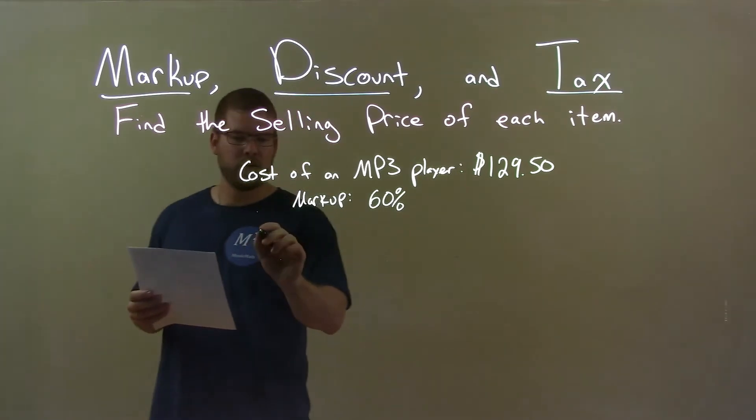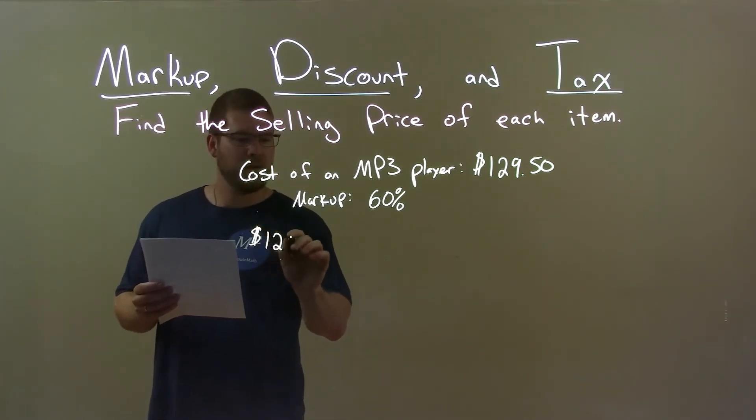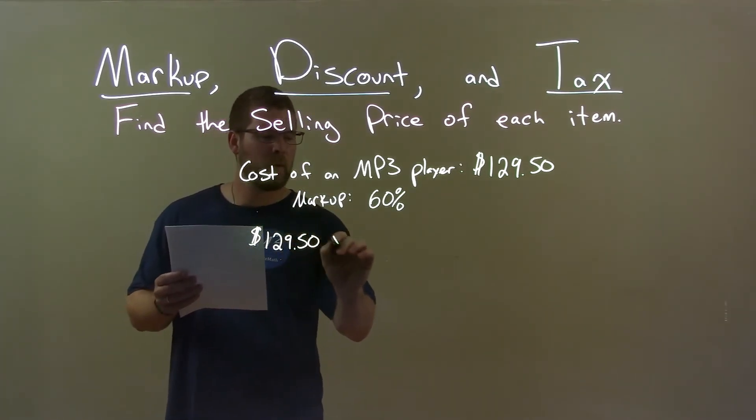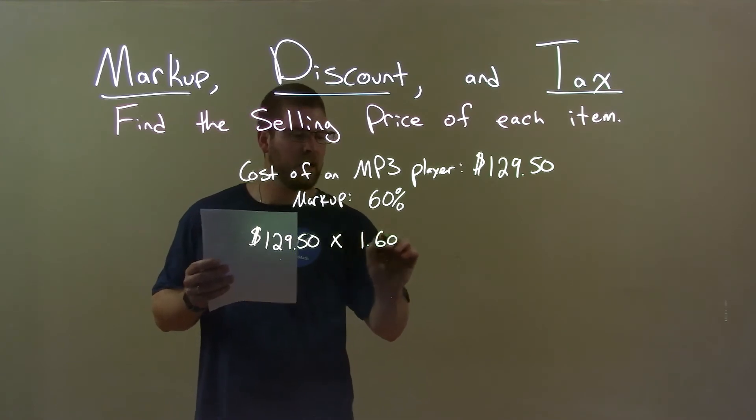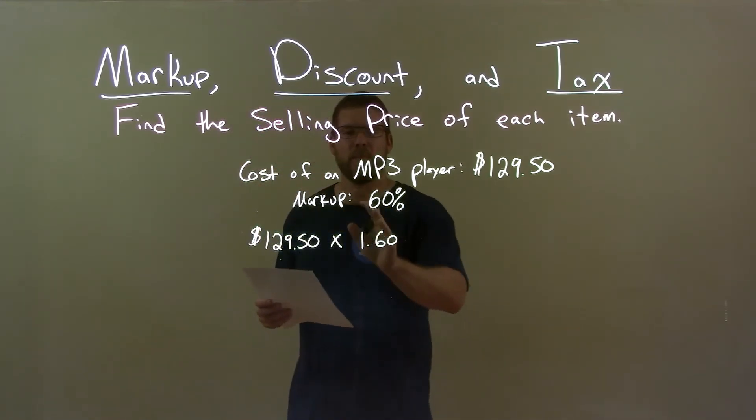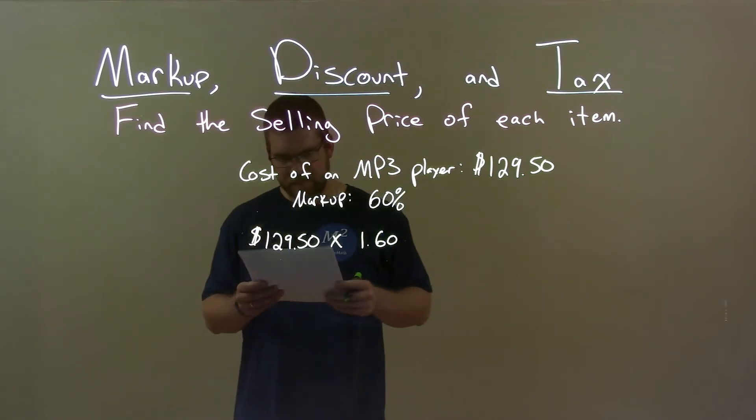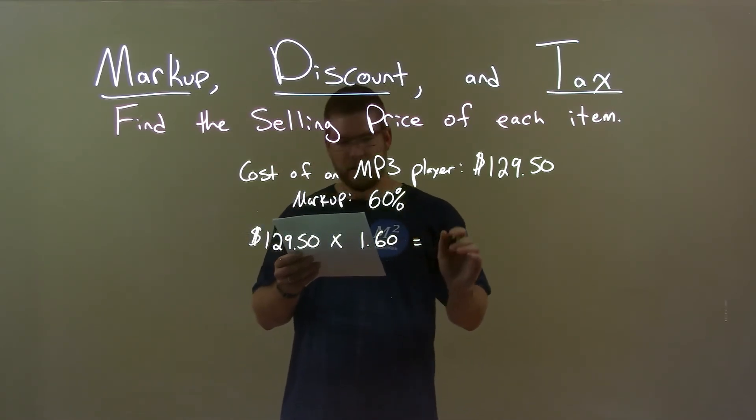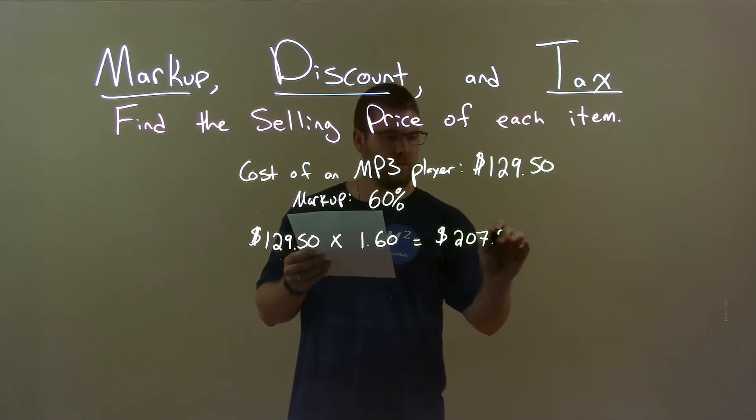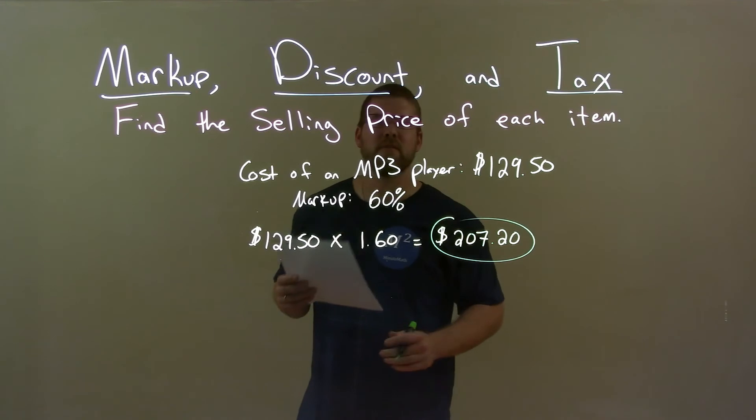Well, we take that $129.50 and we're going to multiply that by 1.60. That's how we calculate the markup. So we just put a 1, and then whatever percent we have. So 1 point, and then the percent as a decimal, .60. That gives us a value of $207.20, and there is our final answer.